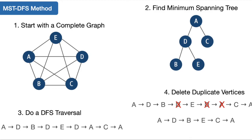This is the MST-DFS, or minimum spanning tree depth first search method. Both of our two algorithms require knowledge of minimum spanning trees. I'll walk through it briefly, but I strongly recommend you go back and watch one of my two videos where I explain how to find a minimum spanning tree — namely Kruskal's algorithm and Prim's algorithm. I'll put links down below in the comments.